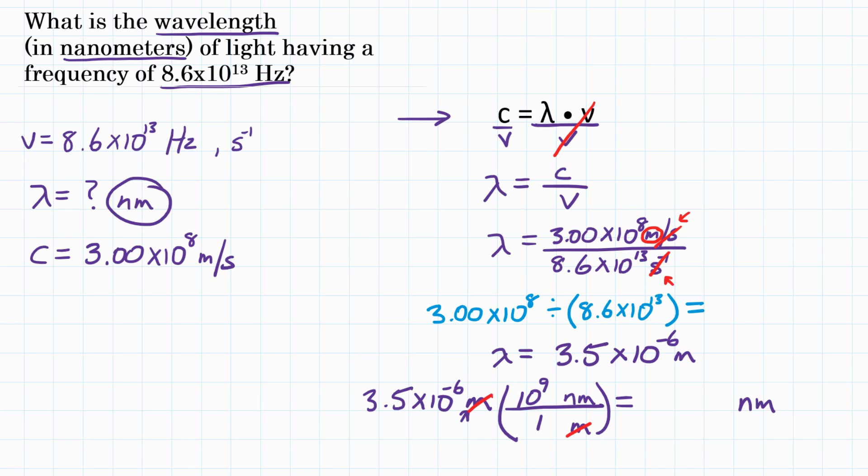Plug this in your calculator, and you would do 3.5 times 10 to the negative 6th times 10 to the 9th, and you should get 3.5 times 10 to the 3rd.